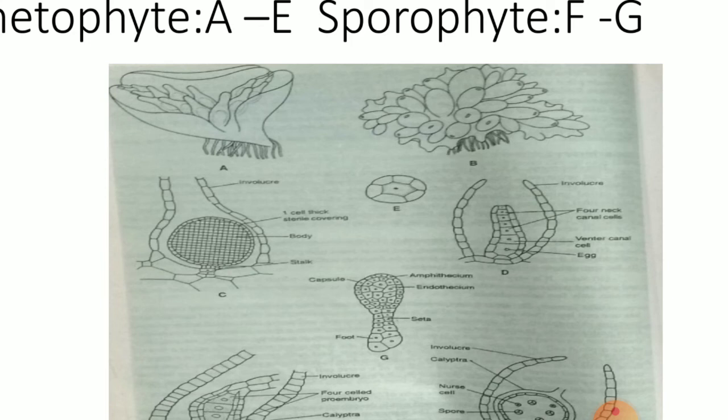The involucre is one cell layer thick and has a single antheridium. The body of the antheridium has a single large cell layer thick sterile covering. The cells of the antheridium contain chromatophores, due to which the antheridium becomes deep orange-red color on maturity. Inside the sterile covering there are present biflagellated spindle-shaped antherozoids or sperms. Out of the two flagella, the lower is slightly longer. The development of the antheridium is similar to that of the order Marchantiales.